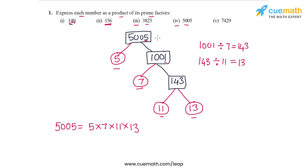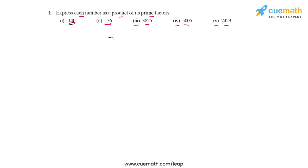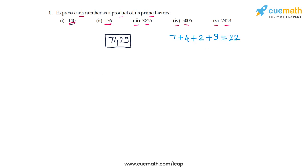Now let's do the prime factorization of the number in part 5, which is 7429. This number is not even, so it's not divisible by 2. It's not divisible by 3 because the sum of its digits — 7 + 4 + 2 + 9 = 22 — is not a multiple of 3. It's also not divisible by 5 because its last digit is 9. Furthermore, 7429 is not divisible by 7 either.